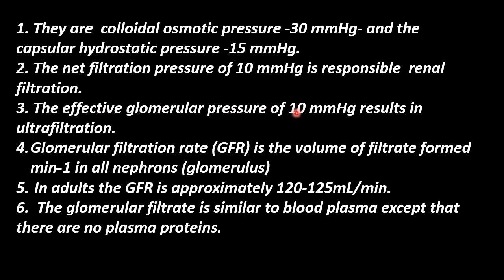The effective glomerular pressure of 10 mmHg results in ultrafiltration. The glomerular filtration rate, or GFR, is the volume of filtrate formed per minute in all the nephrons. Normally, the filtration rate per minute is 120 to 125 ml. The filtrate contents are similar to blood plasma, except that there are no plasma proteins and no blood cells.